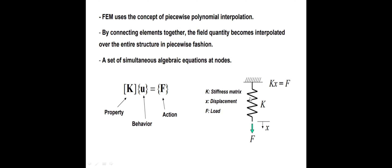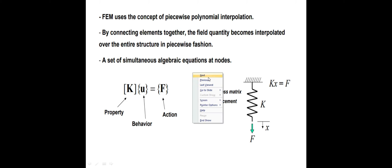It is very simple. Here one spring is added — a simple spring hanging downwards. Now we are applying a force F. Automatically the spring will elongate — that depends upon the stiffness of that spring. It will elongate by X value, and X is the displacement. Finally this mathematical representation is F = K × X. Depends upon F, automatically it will change — K into X.